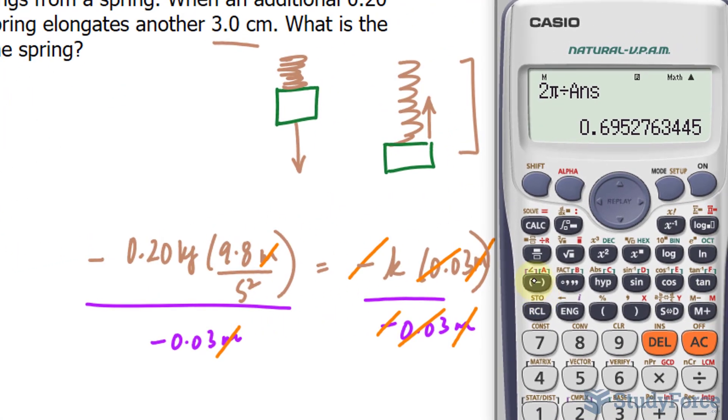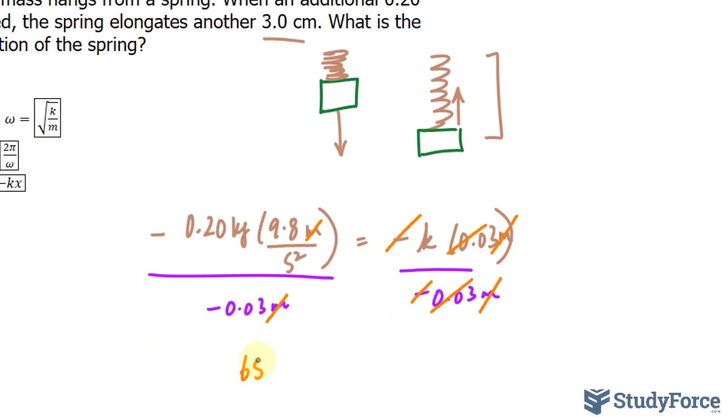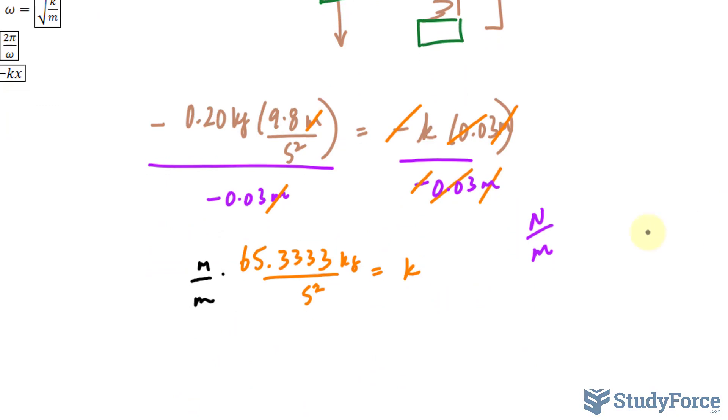Negative 0.20 times 9.8 divided by negative 0.03, we get 65.3 repeating, 65.333. I don't want to round too early, I'll just keep those decimal places for now. And the units are kilograms per second squared. Now that's interesting because usually the units for the spring constant are in newtons per meter. So what we can do to make it into newtons per meter is we can use a simple algebraic trick by multiplying the top and the bottom of this number by meters per meter.